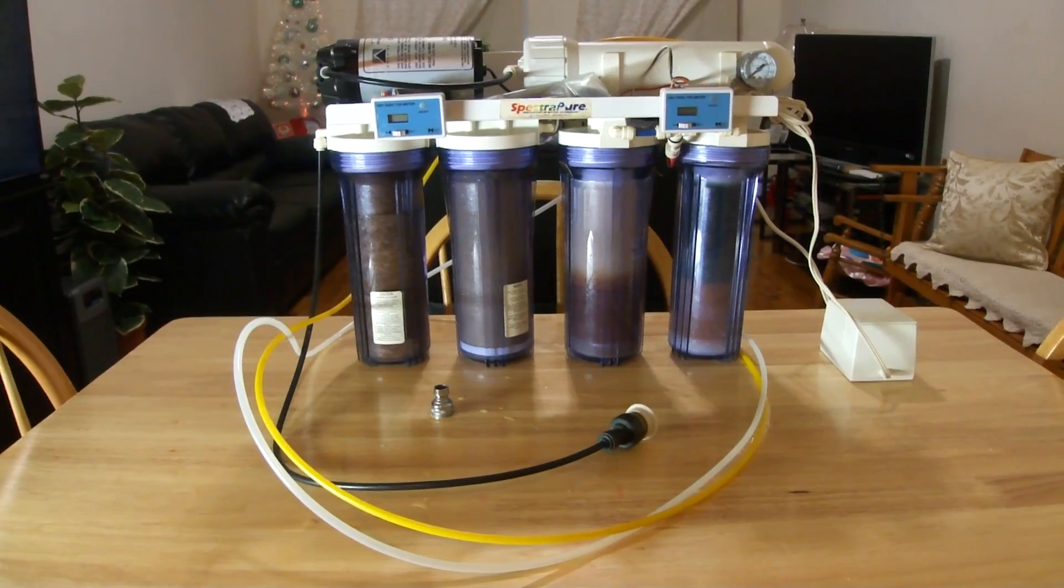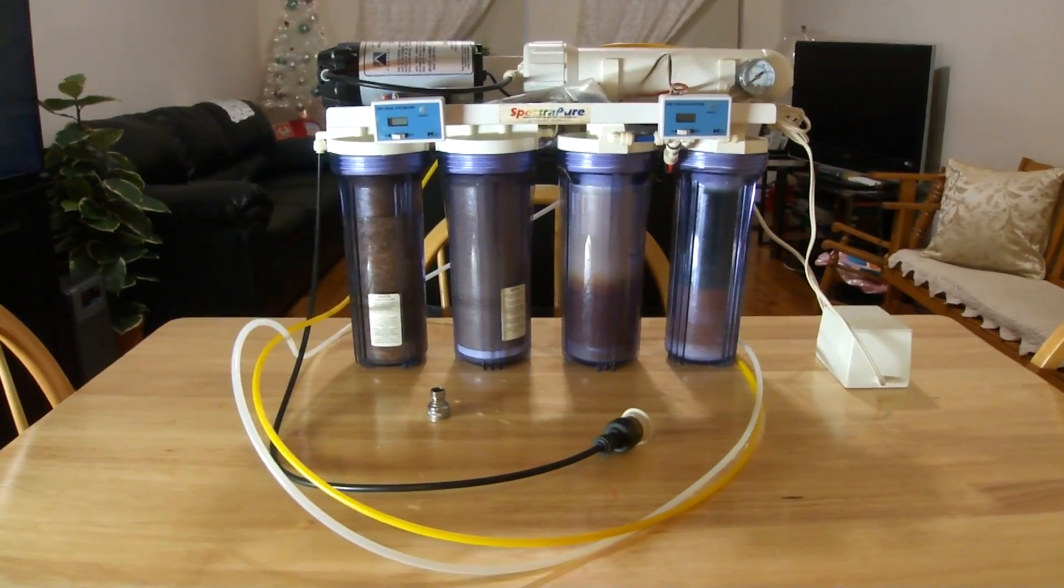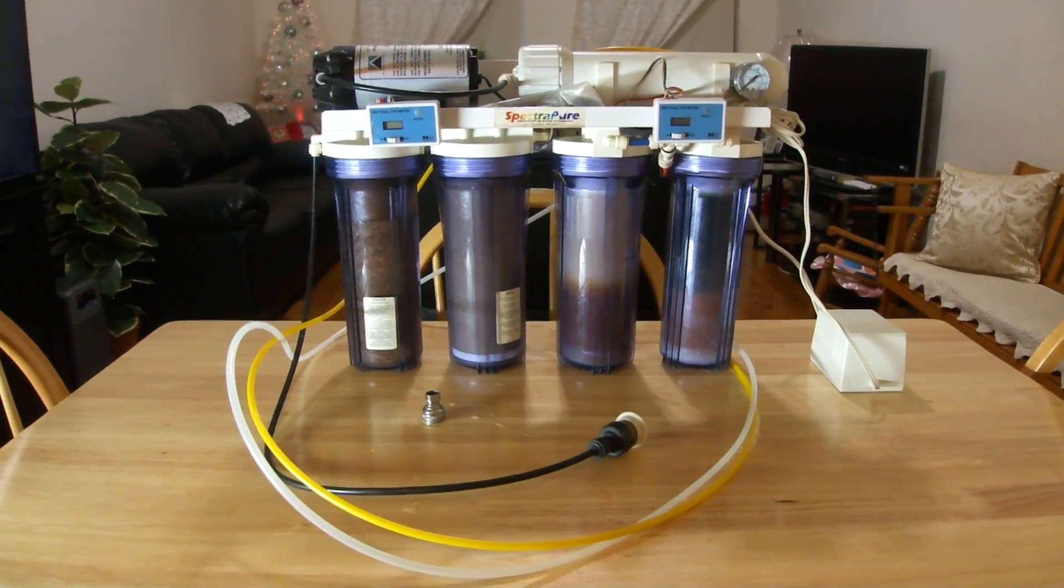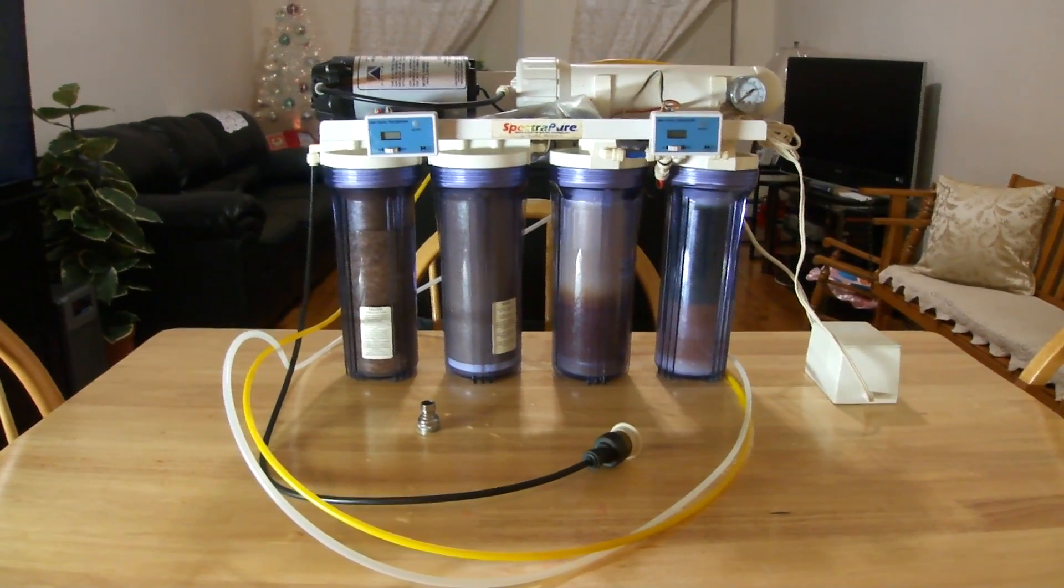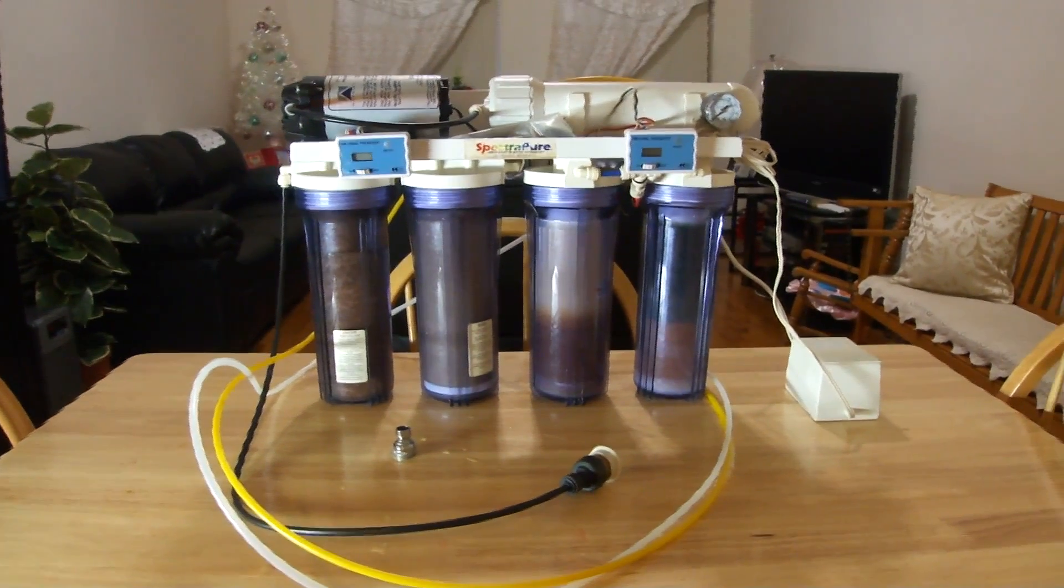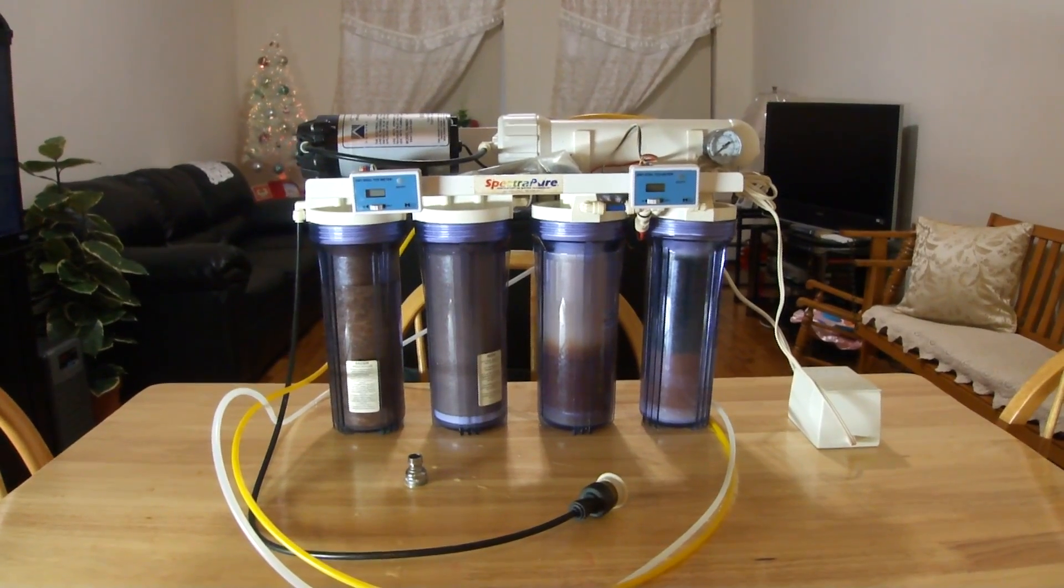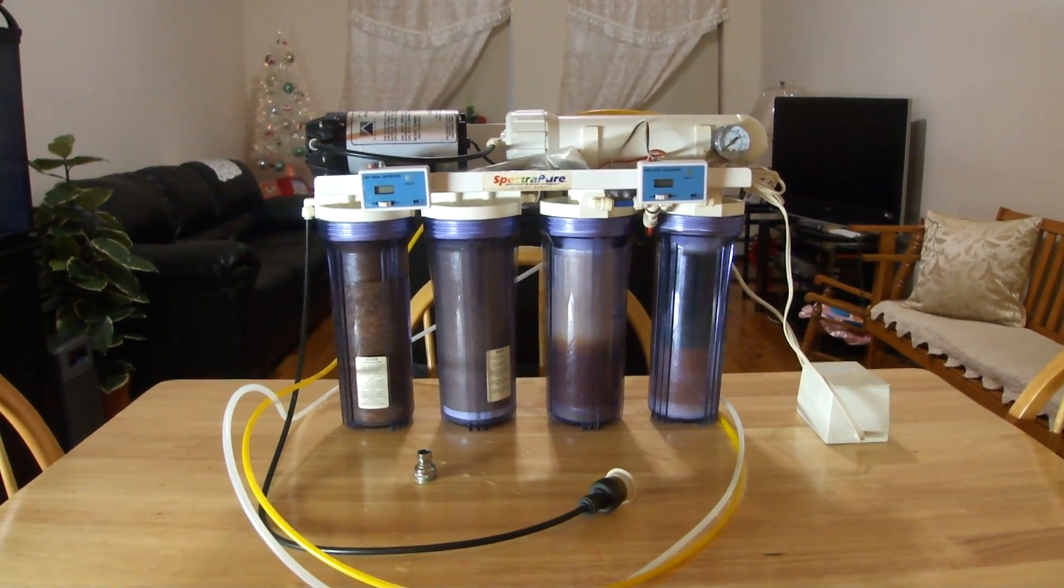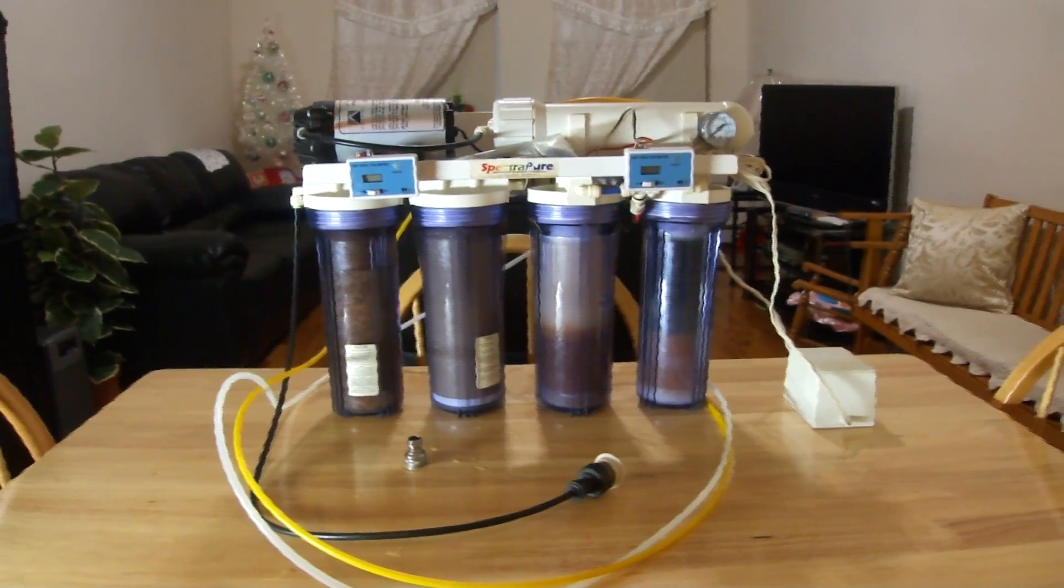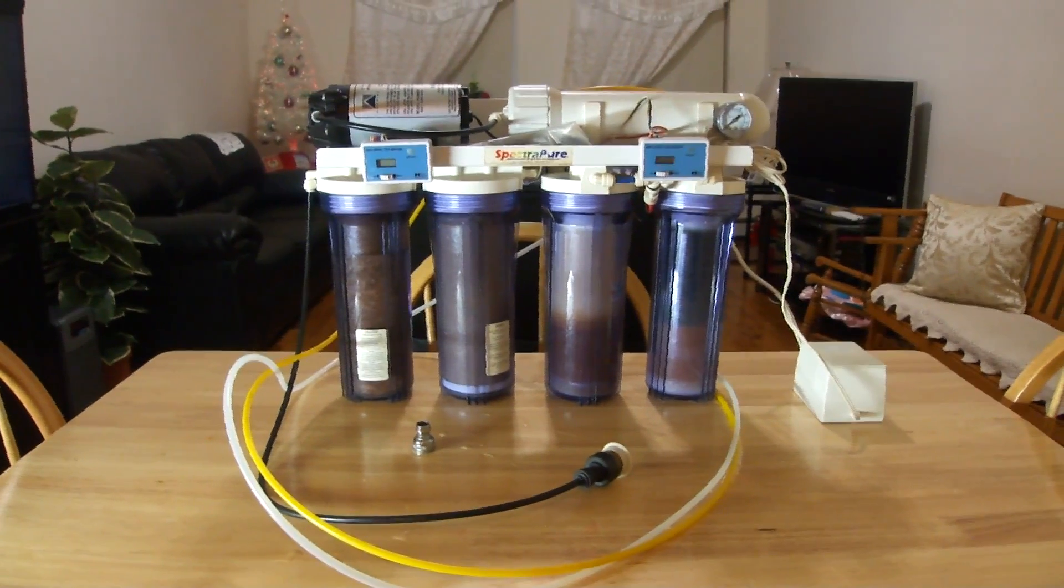This particular unit has a four to one ratio which means it discards four gallons of dirty water before it makes one gallon of pure water. So 90 gallons per day is what it advertises. Let me touch up on this as well, there's a couple of aspects that come into play before you can actually really collect 90 gallons per day.